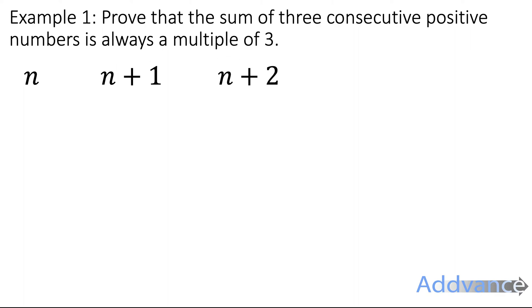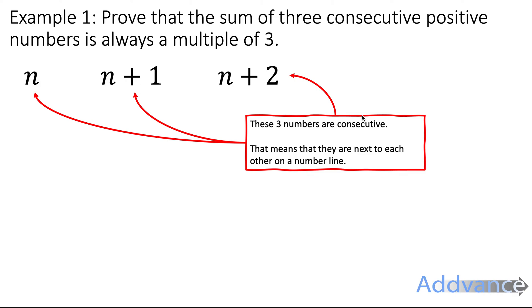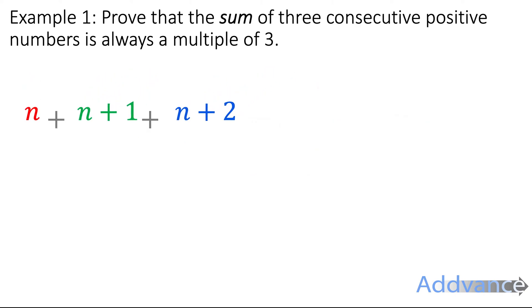So n, n plus 1 and n plus 2 are how we write consecutive positive numbers using algebra. These numbers are next to each other because they are only one apart. And it says the sum of them, so we need to add them all together. So we add them all together because it says sum. Sum means add.